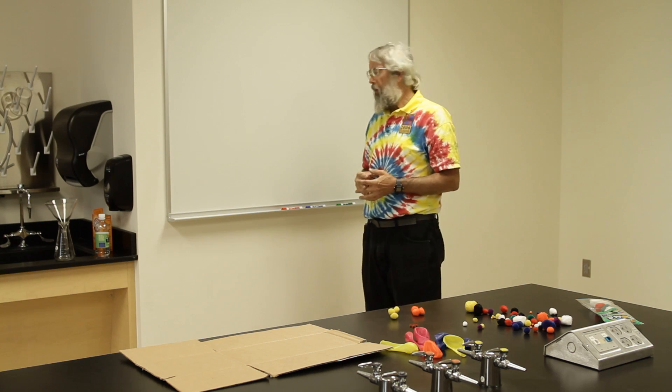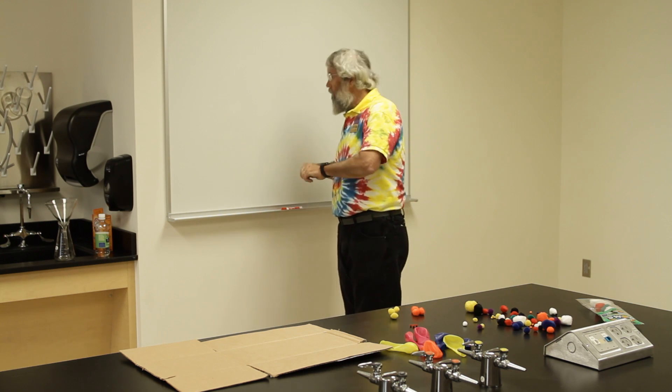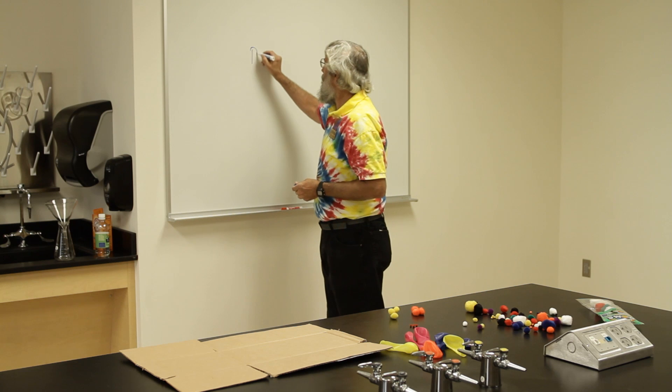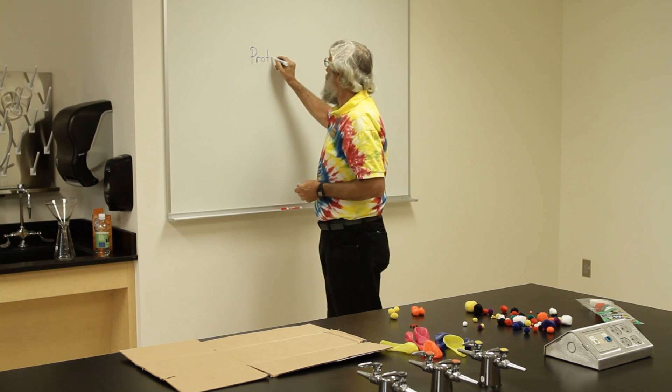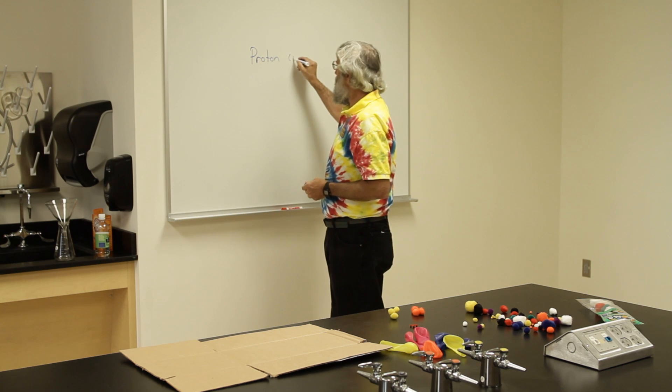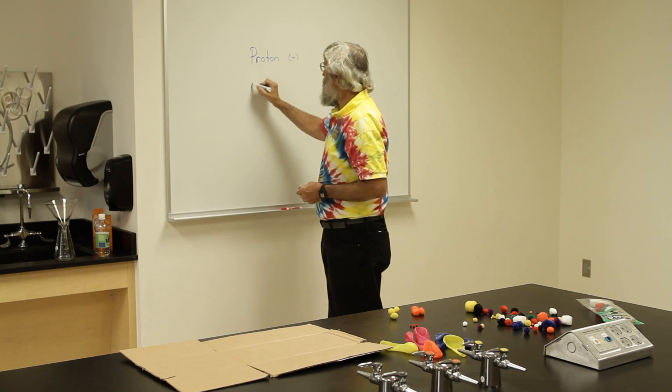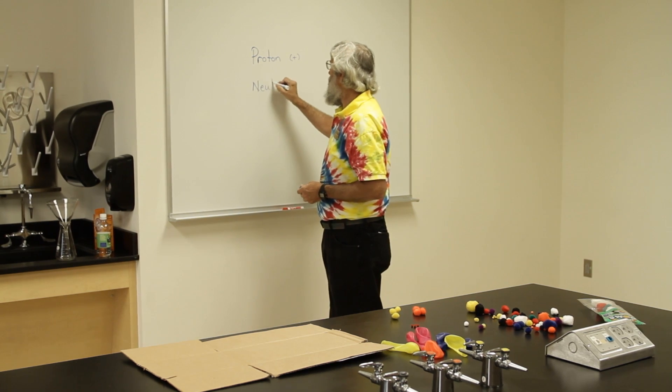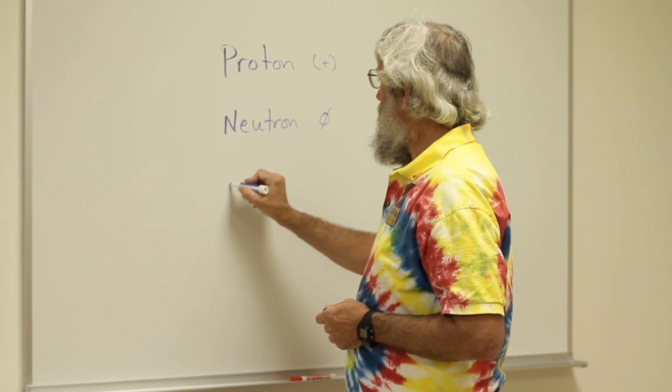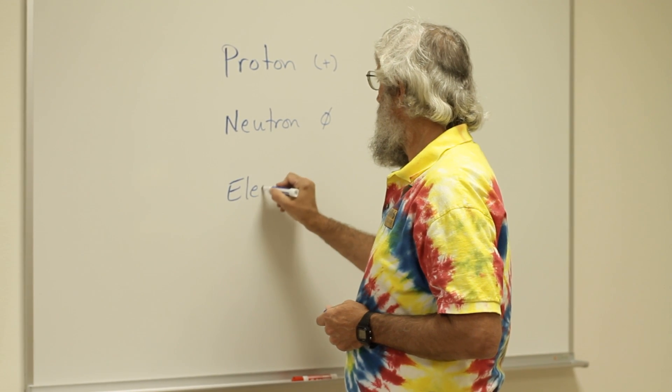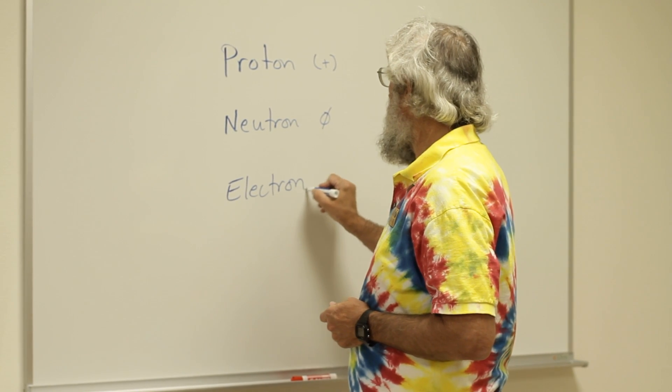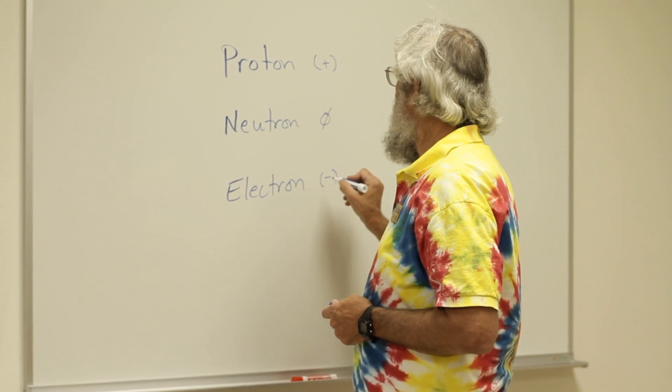There are three common subatomic particles. We have the proton, which has a positive charge. We have a neutron, which has zero charge, and the electron, which has a negative charge.